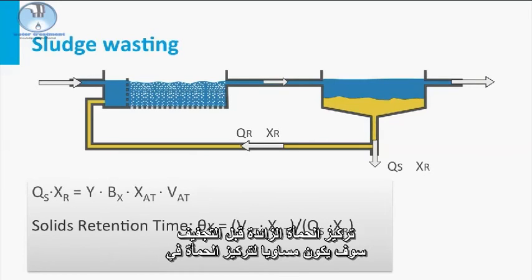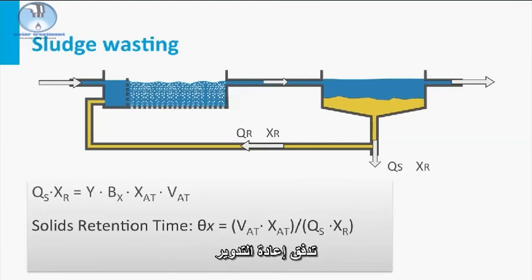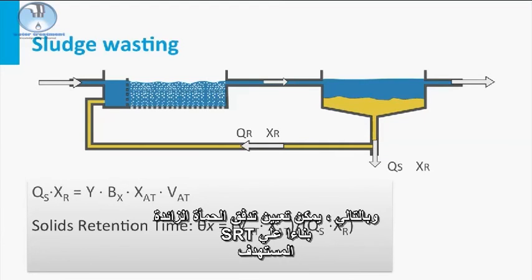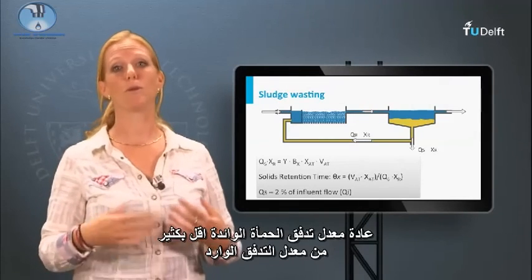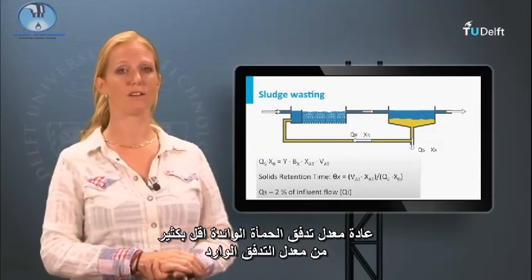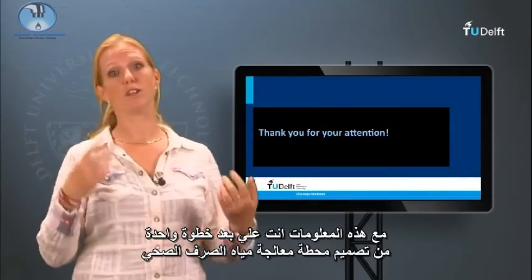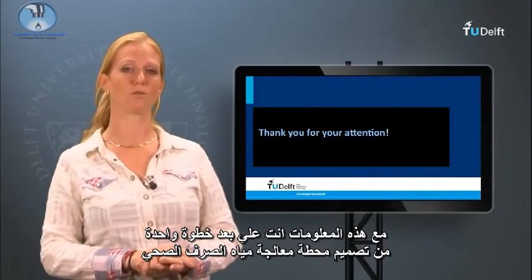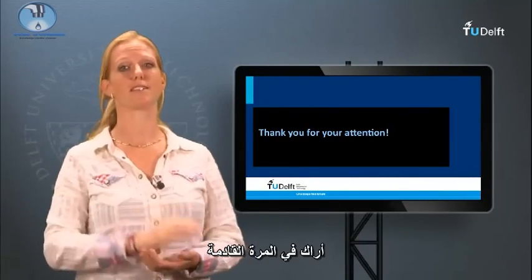The concentration of the waste sludge before thickening will be equal to the sludge in the recycle flow. Therefore, the waste sludge flow can be set based on a target SRT. Typically the waste flow rate is much lower than the influent flow rate. With this information you are one step further in the design of a wastewater treatment plant. See you next time!